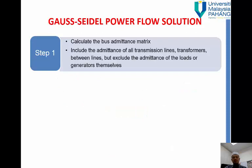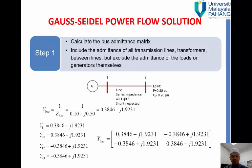So step number one, we calculate the bus admittance matrix. How to calculate the bus admittance matrix? Since we have two buses, bus one and bus two, so meaning that our Y bus will have bus two times two. Bus two times two, so in order to get this one is Z series impedance, so we need to calculate our Y, Y12.